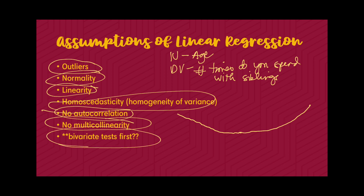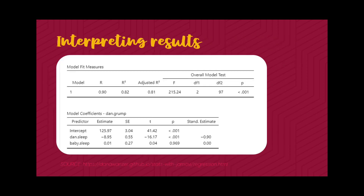The last assumption — marked with an asterisk because it varies across disciplines — is that some fields require you to test independent and dependent variables individually first using Pearson or Spearman to establish a relationship between each independent variable and the dependent variable before placing them into the model. Variables that are not significant should not be placed in the model. This practice is variable across disciplines.